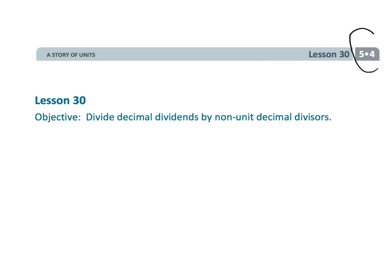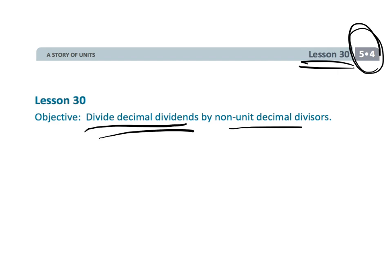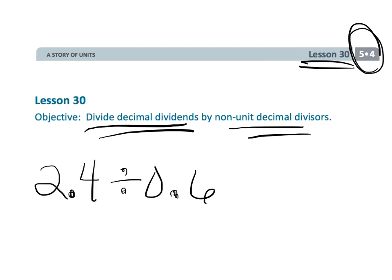This is 5th grade, Module 4, Lesson 30. In this lesson, we are going to be dividing decimal dividends by non-unit decimal divisors. It basically means we're going to be dividing things like 2.4 divided by 0.6, that kind of a thing.